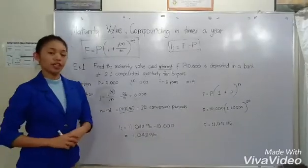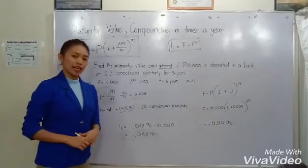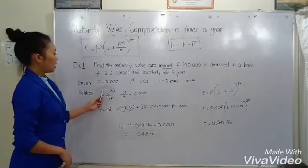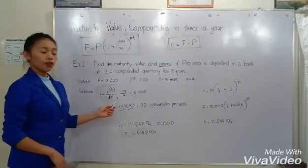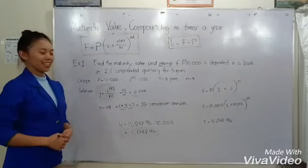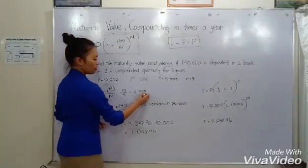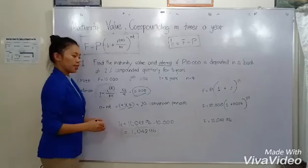First, you have to compute j. What is j? j is the nominal rate of interest over the frequency of conversion, having the result of 0.005.